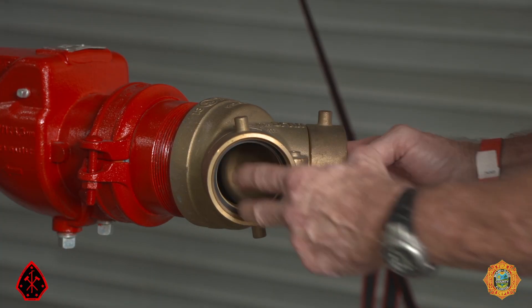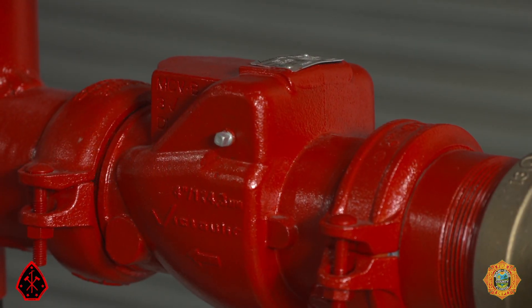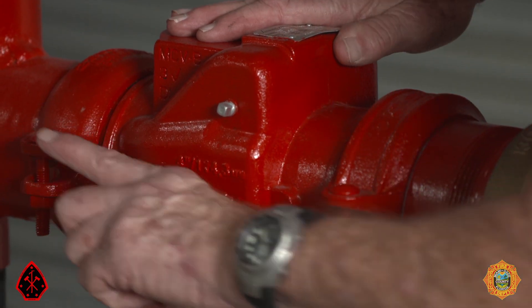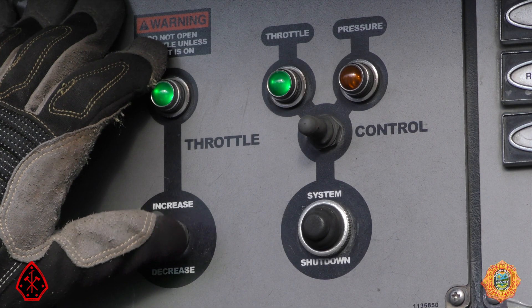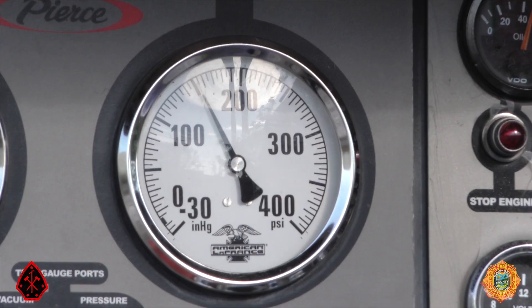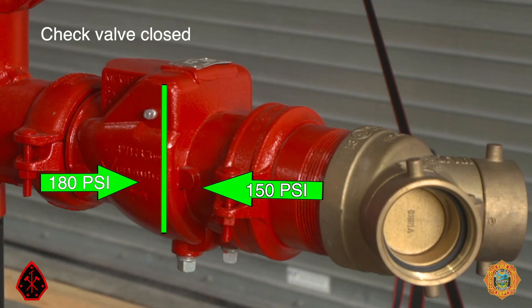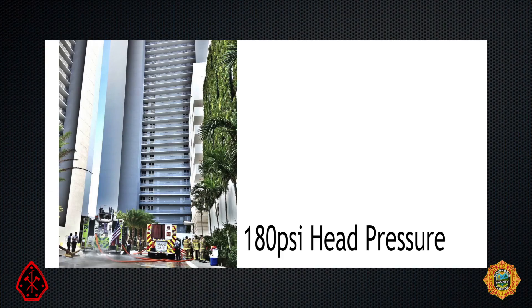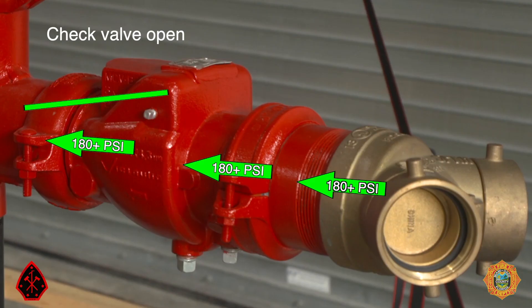There is a one-way check valve between the fire department connection, the FDC, and the base of the risers. If an engine was to pump 150 psi into the fire department connection, it would fail to push open the check valve. The engine would have to increase its discharge pressure to over 180 psi in order to force open the check valve and get water in the system, even if the fire was on a lower floor.